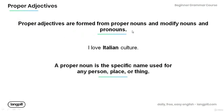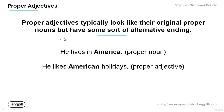Now, proper adjectives are formed from proper nouns and modify nouns and pronouns. For example, in 'I love Italian culture,' the word 'Italian' is a proper adjective formed from the proper noun 'Italy.' Remember that a proper noun is the specific name used for any person, place, or thing — such as Italy.